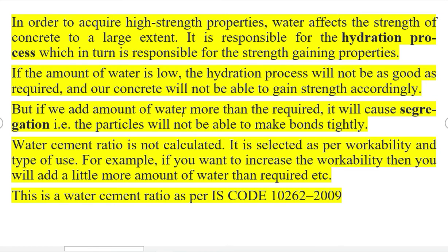If we add more water than required, it will cause segregation. If the amount of water is low, it can cause honeycomb and reduced strength. Water-cement ratio is not calculated arbitrarily — it is selected as per workability and types of use. We are guided by the standards; we cannot determine it entirely by ourselves. For example, if you want to increase the workability, then you will add a little more water than required. This is the water-cement ratio as per IS code.